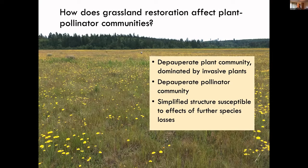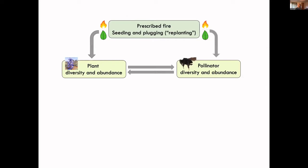You have a really simplified structure of interactions in that community that's susceptible to effects of further species losses. You can imagine that if a dandelion-like flower were lost from this landscape, there would be very little to forage on for bees. Restoration in the sites where I work is often carried out using two complementary processes.